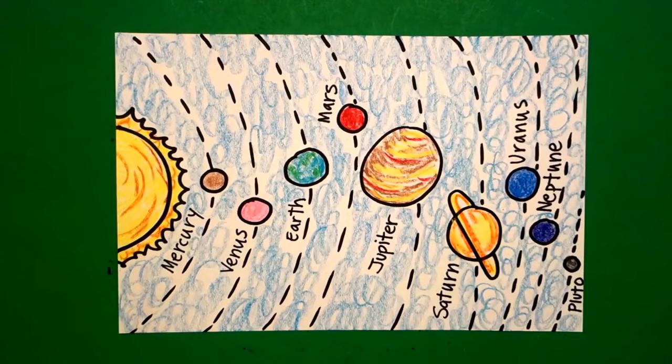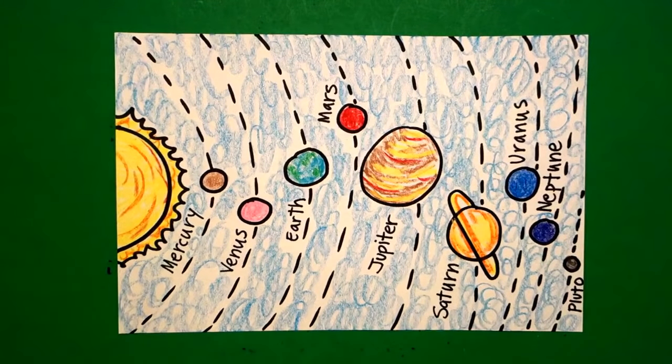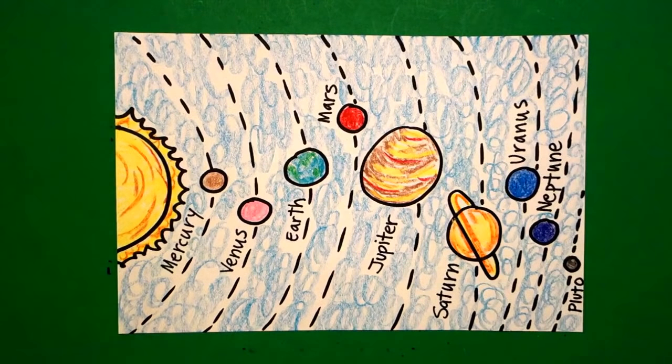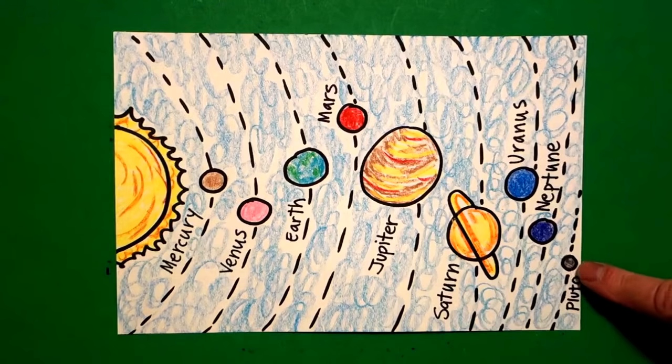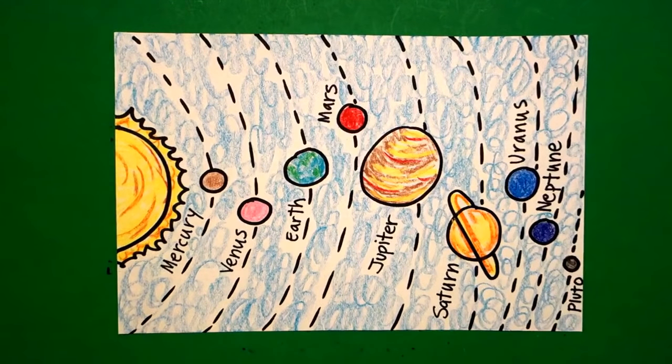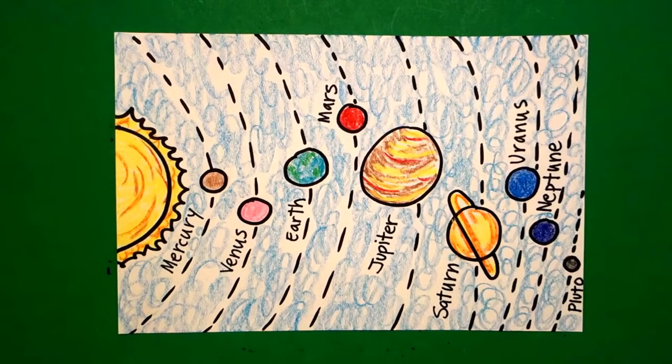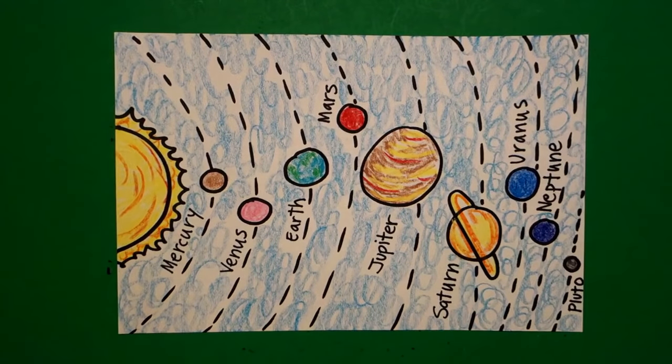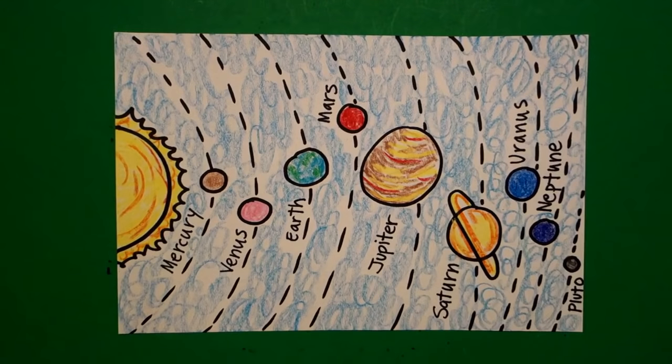Okay, let's see what this looks like all colored in. Here's my solar system with all my planets, all labeled with my orbits and everything else. Somebody in my audience, check me on Pluto. You guys are real good about telling me when I make a mistake. So, let me know if Pluto is a planet or is it not. Okay, bye bye.